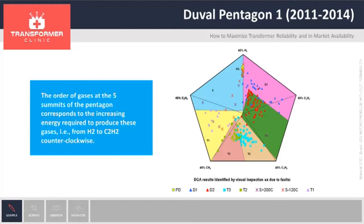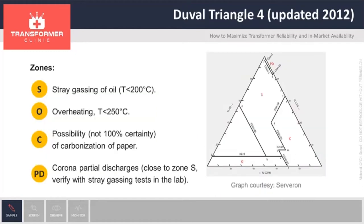Pentagon 1 uses all five hydrocarbon gases: hydrogen H2, ethane C2H6, ethylene, and acetylene. Triangle 4 allows identification of three subtypes of thermal faults of lesser concern — faults S, O, and corona PD. Triangle 4 uses hydrogen, methane, and ethane, which are the so-called low temperature gases.